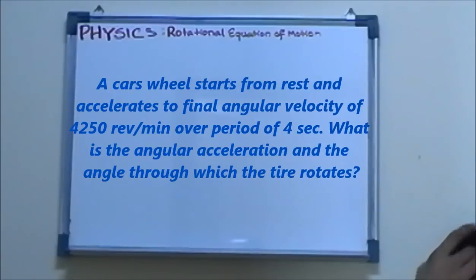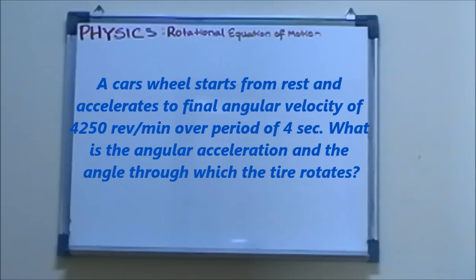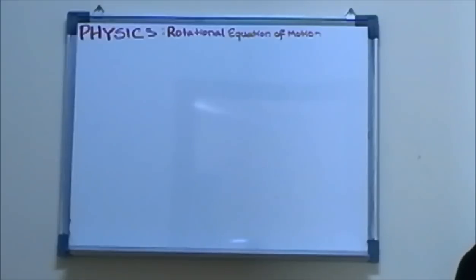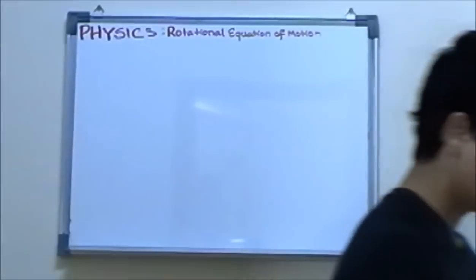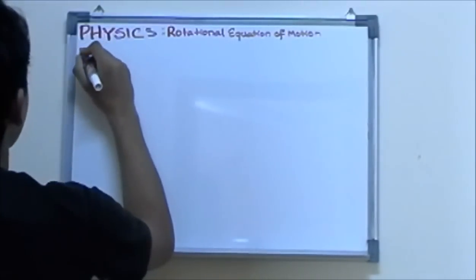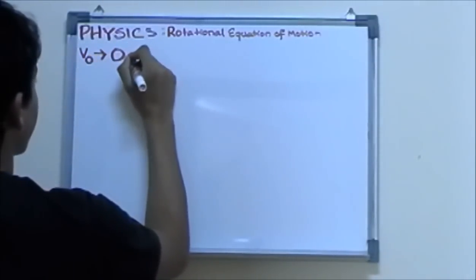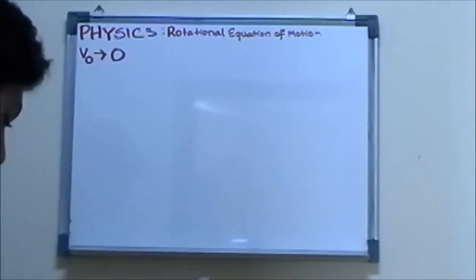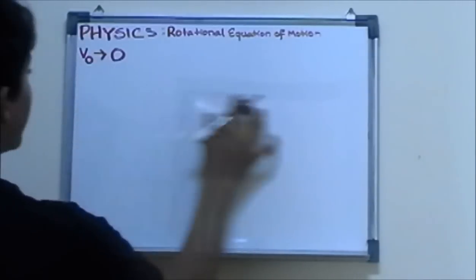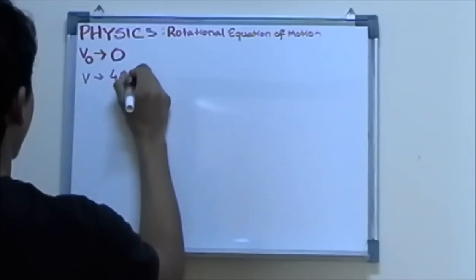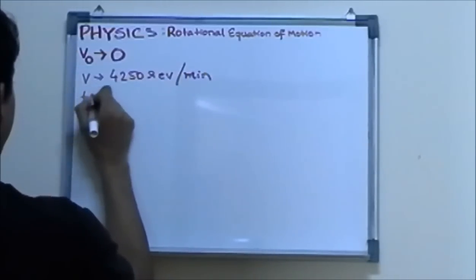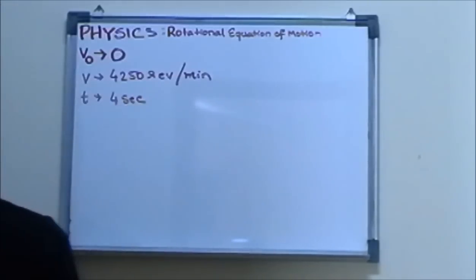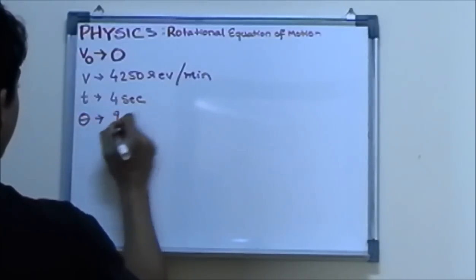A car tire starts from rest and accelerates to a final angular velocity of 4250 revolutions per minute over a period of 4 seconds. What is the angular acceleration, and the angle through which the tire rotates? We know the initial angular velocity is zero, the final is 4250 rpm, and the time is 4 seconds. We need to find the angle and the acceleration.